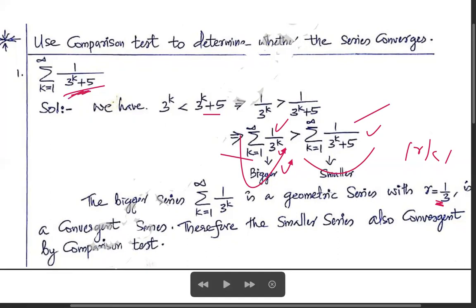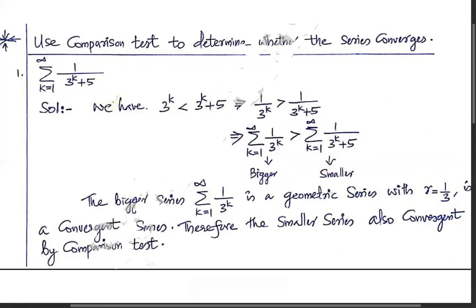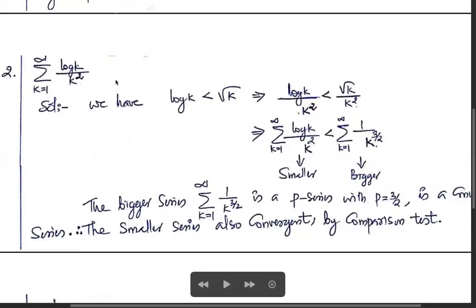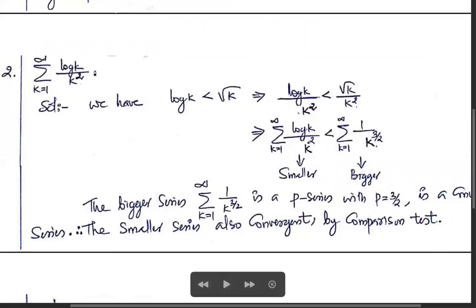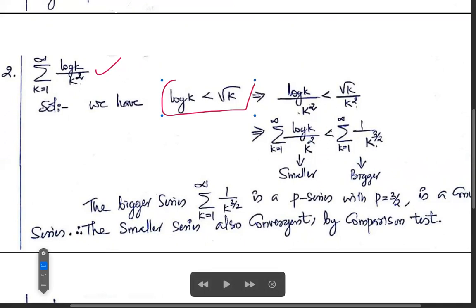Next problem: check whether the series summation from k=1 to infinity of log(k)/k² is convergent or not. We know that log(k) < √k, so log(k)/k² < √k/k² = 1/k^(3/2).